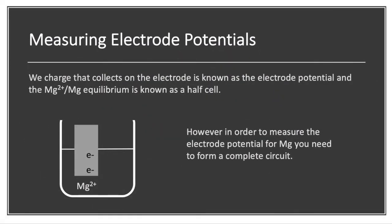So we can now begin to consider how do we actually get numerical values for these electric potentials. As we mentioned in the previous video, we know that we have an equilibrium between magnesium solid and Mg²⁺ ions when we place a piece of magnesium into water.